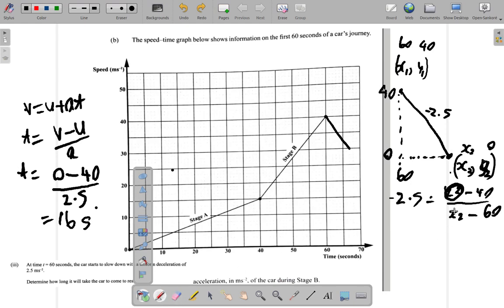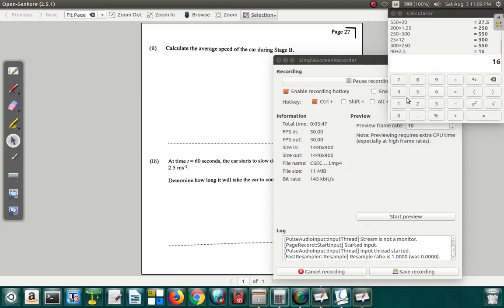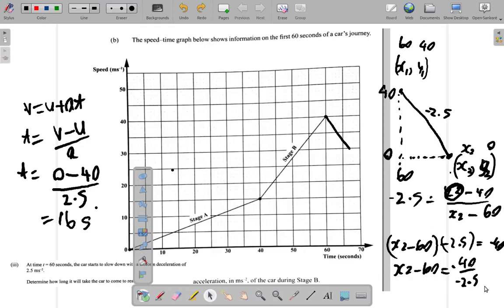So what this is saying now, multiply both sides by x2 minus 60, x2 minus 60 times negative 2.5 is equal to 0 minus 40, negative 40. If I divide by negative 2.5, I have x2 minus 60 is equal to negative 40 over negative 2.5, same as 40 over 2.5. So 40 over 2.5 is 16. So I get 16, and then add 60 to both sides. x2 is equal to 60 plus 16.